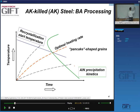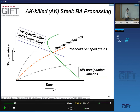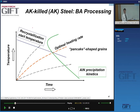That compound is aluminum nitride precipitates. To understand how we control things in batch annealing processing of formable steels, we need to look at the recrystallization start temperature.